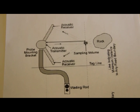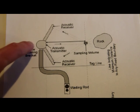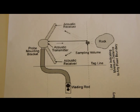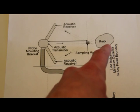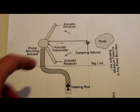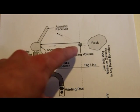The flow tracker uses acoustic doppler to track sediment in the water to calculate the velocity. The flow tracker head has an acoustic transmitter and two acoustic receivers. One thing you have to look out for when making a measurement is boundaries such as rocks — it's good to keep the sample volume at least two inches away from them. The sample volume is located four inches from the acoustic transmitter.